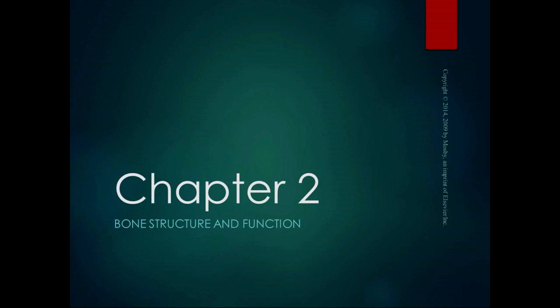Chapter two is the structure and function of joints. When we talk about joints, we're talking about either where two bone ends come together, or a functional joint where it's not necessarily two bone ends but areas of the body that join together and have a functional joint action. The scapulothoracic joint is a good example, where the scapula articulates with the posterior side of the ribcage — not two bone ends coming together, but it has the function of a joint.